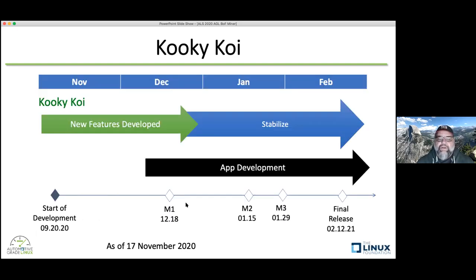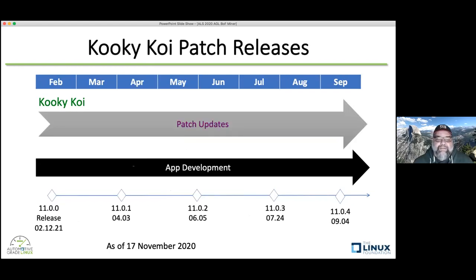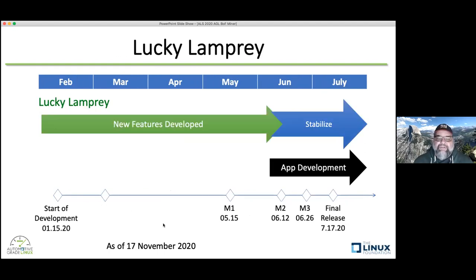Here's the schedule for Koi. We've got the first milestone release towards the end of this month and then the final release in mid-February. Then we'll have the Kuki Koi patch releases — the 11.0 patch releases — through at least the first three quarters of next year. Our plan right now is to stick with the Dunfell branch 3.1 for its full two-year life cycle.